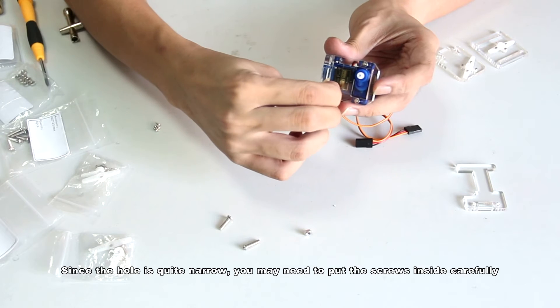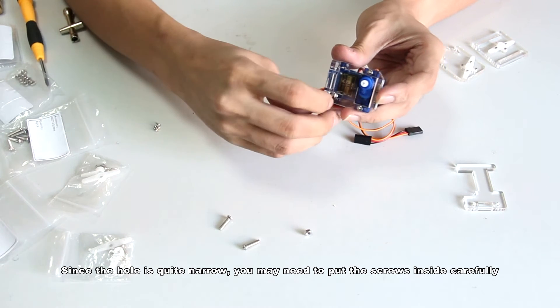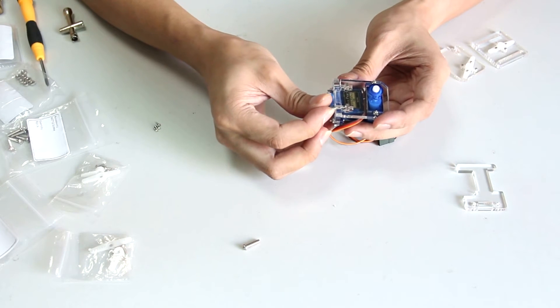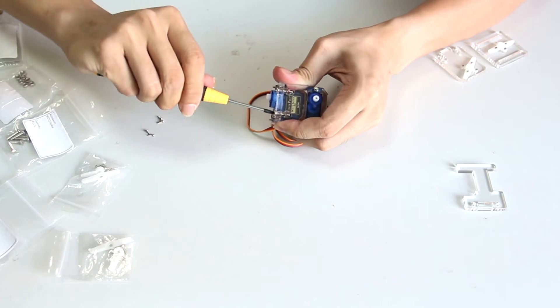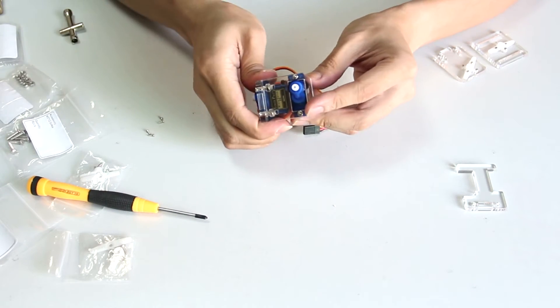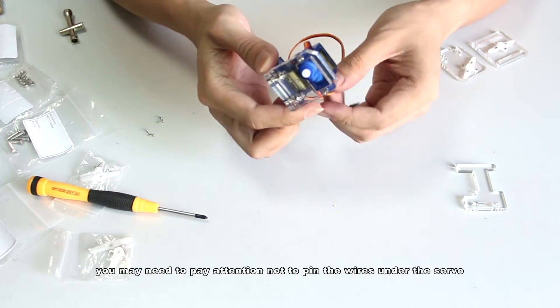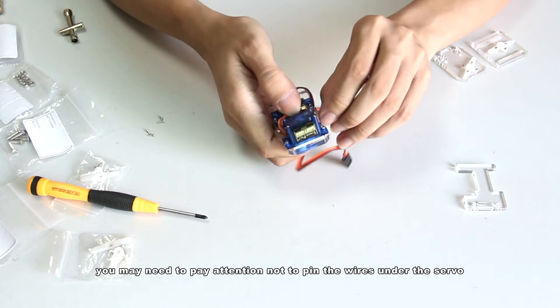Since the hole is quite narrow, you may need to put the screws inside carefully. And during the assembly, you may need to pay attention not to pin the wires under the servo.